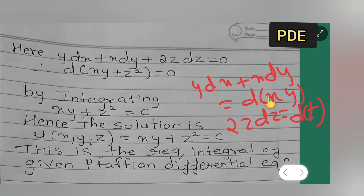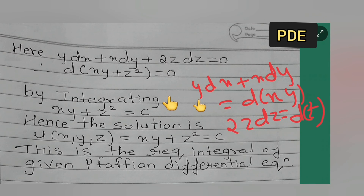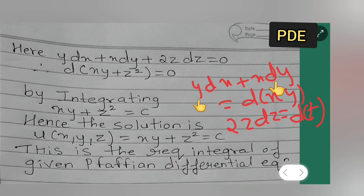To verify: y dx plus x dy is exactly d(xy) — differentiating xy with respect to x gives y, and differentiating with respect to y gives x. Similarly, 2z dz equals d(z²), since the derivative of z² is 2z dz.